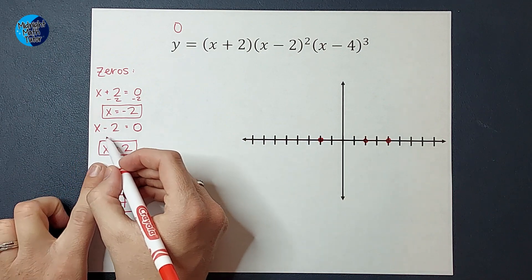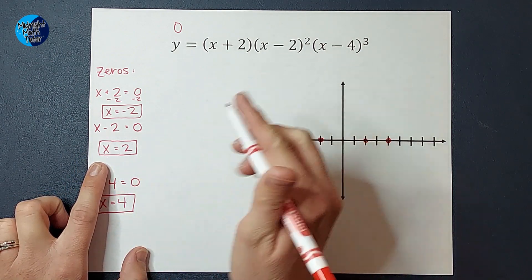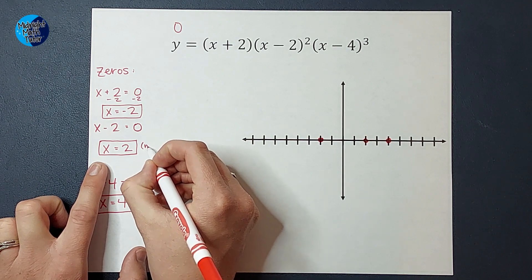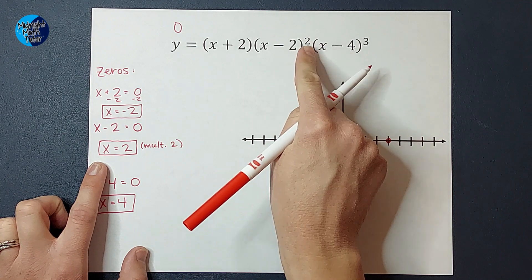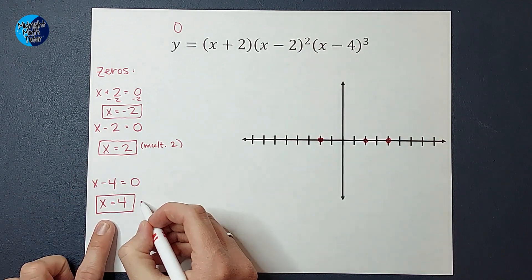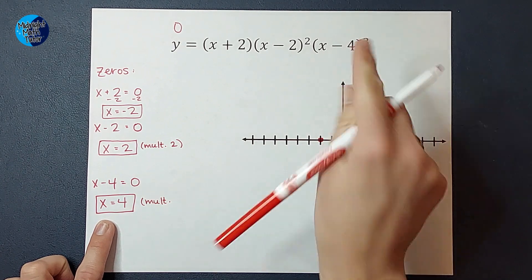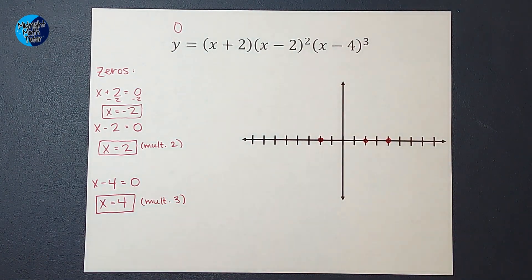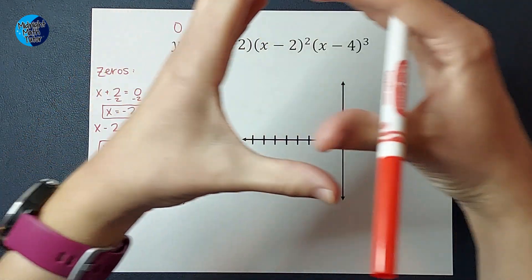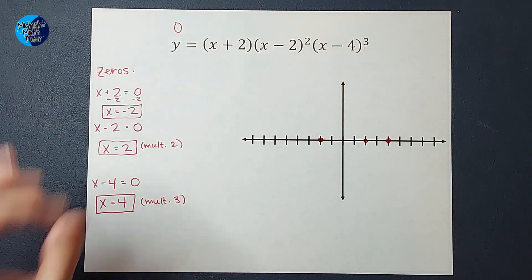Because I could have written x minus two equals zero twice because there's really two of those. So I'm going to put, that's called a multiplicity. I'm going to say this has a multiplicity of two. And this one has a multiplicity of three, because I could have had that answer three times. Since this is really x minus four times x minus four times x minus four. And those will come into play in just a minute.